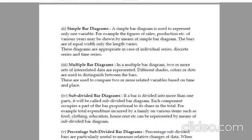Subdivided bar diagrams. If a bar is divided into more than one part, it will be called subdivided bar diagrams. Each component occupies part of the bar proportional to its share in the total. For example, total expenditure incurred by a family on various items such as food, clothing, education, house rent. That means you have your salary and you are dividing your salary in education, food, clothes, house rent, etc. This is subdivided.